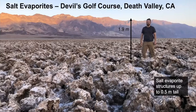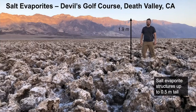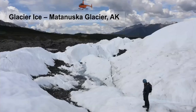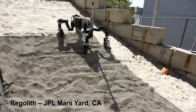The first analog we've been testing our robot on is the Devil's Golf Course in Death Valley, selected because of really striking salt evaporate structures. Team member Gareth is seen standing in the middle of this salt evaporate field. We also went out to a glacier in Alaska — there I am for scale at the section where we tested the robot. Finally, we've been using a sand slope as a regolith simulant at our JPL Mars yard, which has a 15 to 20 degree slope.